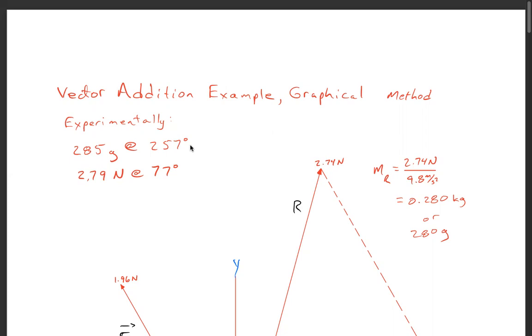That translates to a resultant if we multiply 0.285 kilograms by 9.8, we get 2.79 Newtons at 180 from 257, which gives 77 degrees.